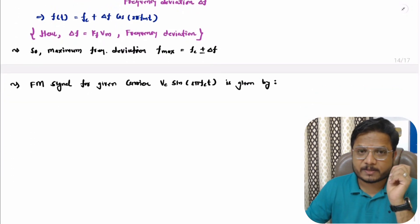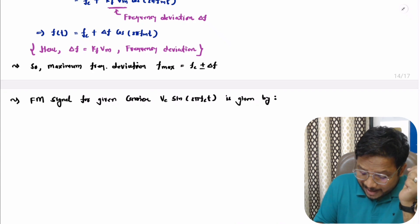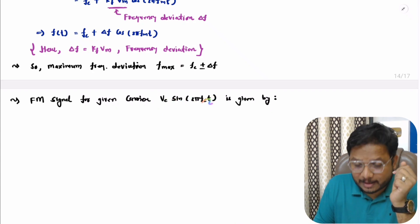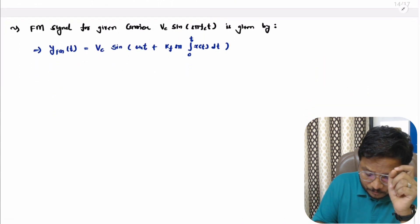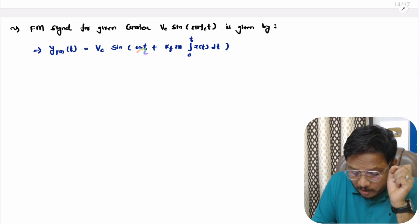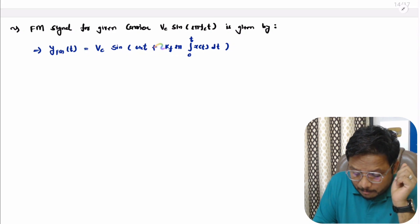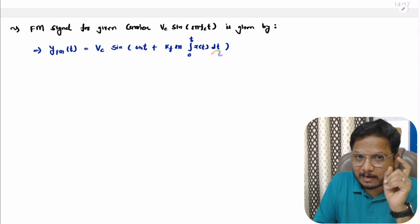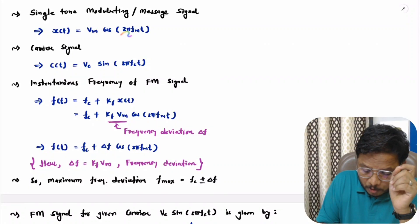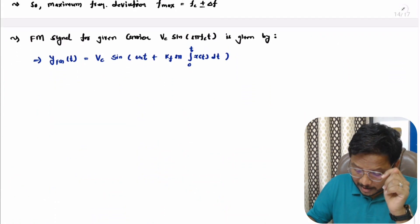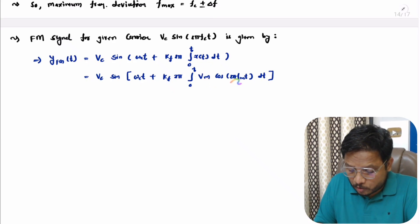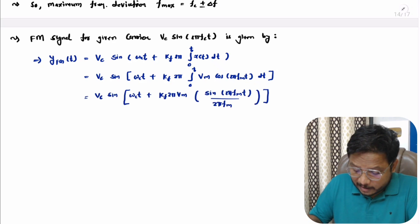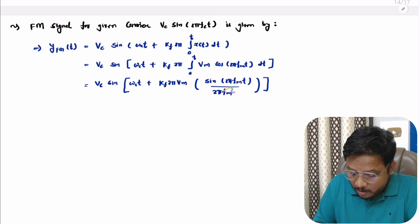Now let me derive the FM signal expression. If the carrier signal is Vc·sin(2π·fc·t), then in FM the frequency changes, and the FM signal becomes Vc·sin(ωc·t + kf·2π·∫x(t)dt). For the single-tone message signal x(t) = Vm·cos(2π·fm·t), we substitute this and take Vm as a constant outside the integral, then integrate cos(2π·fm·t).